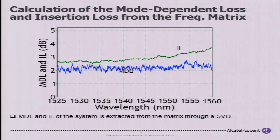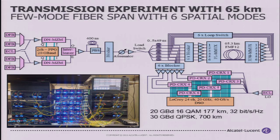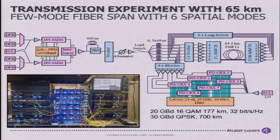Once we have our multiplexers verified with low mode-dependent loss, we can do transmission experiments. We generate our transmitter signals, pass through a recirculating loop that contains the photonic lantern and 3D waveguide multiplexers, and receive all modes simultaneously using a 12-channel coherent receiver with 24 high-speed digitizers. We've been able to transmit 20 Gbaud 16-QAM over 177 kilometers, achieving spectral efficiency above the Shannon limit for a single-mode fiber — the highest spectral efficiency per core. We've also transmitted QPSK over 700 kilometers.